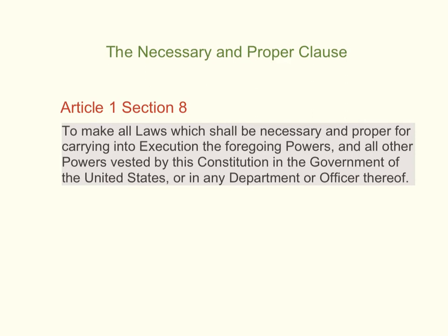The Constitution establishes these implied powers in Article I, Section 8, near the bottom, where it says Congress can make all laws which shall be necessary and proper for carrying into execution the foregoing powers, and all other powers vested by this Constitution in the government of the United States, or in any department or office thereof. This is known as the Necessary and Proper Clause. It basically says that Congress has other powers not listed in the Constitution — powers that are necessary in order for them to carry out those listed powers.